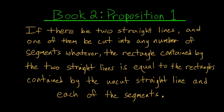For the first proposition of Book II of Euclid's Elements: if there be two straight lines and one of them be cut into any number of segments whatever, the rectangle contained by the two straight lines is equal to the rectangles contained by the uncut straight line and each of the segments.